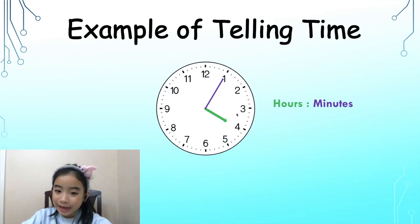First, let's look at the hour hand. The hour hand is pointing to the 4, so it's 4 hours. Now, let's look at the minutes hand. It's pointing to the 1, so it's 5 minutes. So, the time is 4:05.